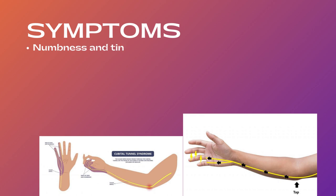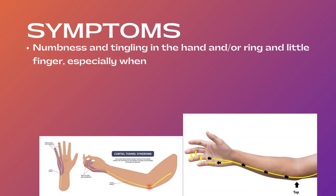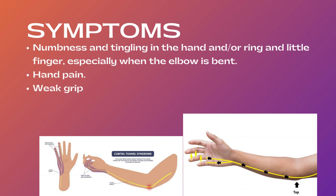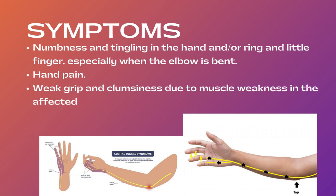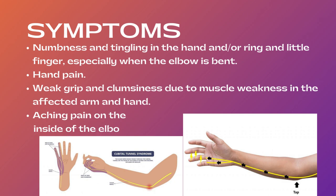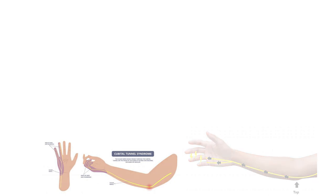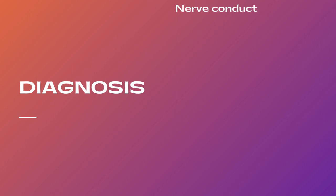After causes, there come the symptoms. The symptoms of cubital tunnel syndrome consist of numbness and tingling in the hand, somehow in the ring finger and in the little finger, especially when the elbow is bent. It may also lead to hand pain or aching pain on the inside of the elbow. It will lead to weak grip and clumsiness due to muscle weakness of the affected arm and hand.